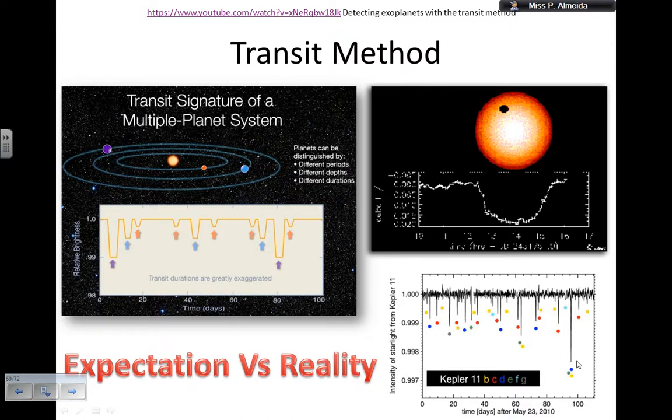Now, problem about this method is that, again, this is the expectation, really nice curved lines or straight lines really, and this is the reality. I mean, there is a lot of ups and downs, okay? And why, you know what, could this be a planet in here? Could this be a planet? Could that be a planet? So sometimes you don't know things for sure. So of course, as any technique, it's not perfect.